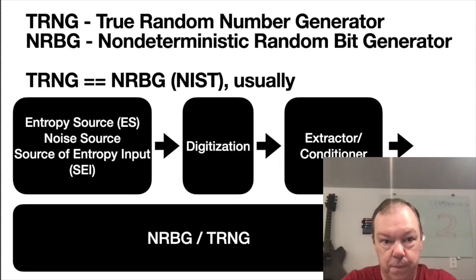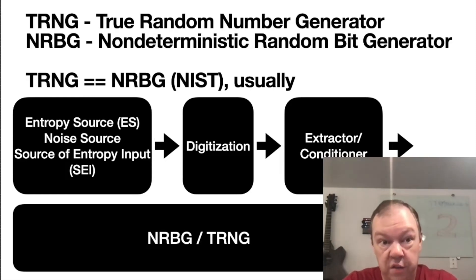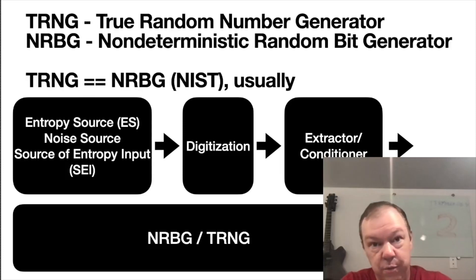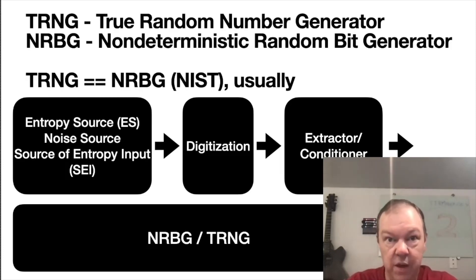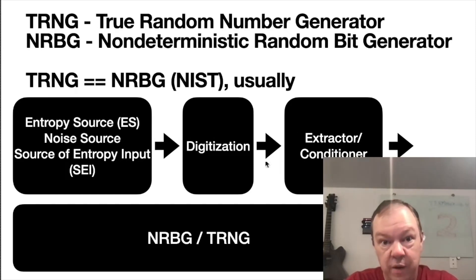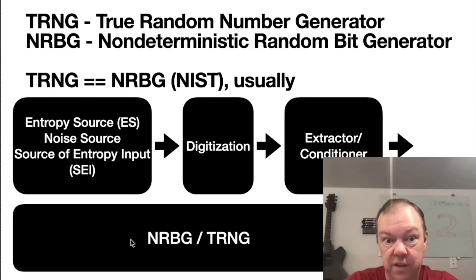What somebody would call a true random number generator (TRNG) and what NIST calls a non-deterministic random bit generator (NRBG) are both the same thing usually. Sometimes when people talk about TRNGs they don't mean a full-entropy source of non-deterministic bits — they might mean a partially entropic source — so it's not a perfectly well-defined term. We have the three things we just talked about: the entropy source, the digitization stage, and the extractor/conditioner. When you have all three together, put them in one box and you can call it an NRBG or a TRNG. So the NRBG and TRNG labels refer to the same box containing those three components.